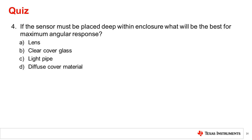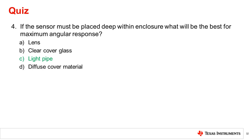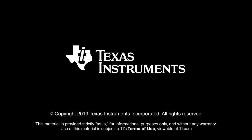Question 4: If the sensor must be placed deep within an enclosure, what will be best for maximum angular response? The correct answer is C, a light pipe. As discussed in this video, a light pipe can be used when the sensor is placed deep within an enclosure to maximize the angular response. Thank you.